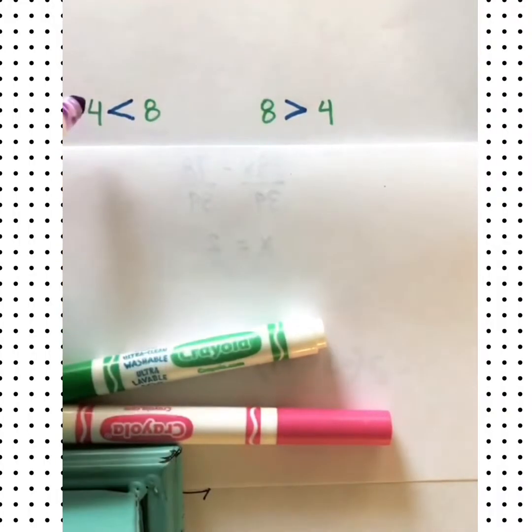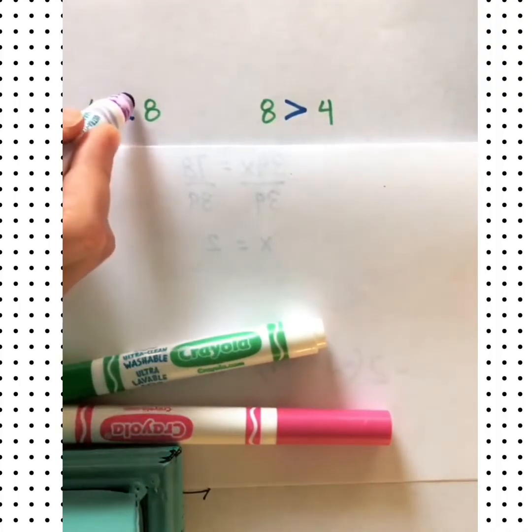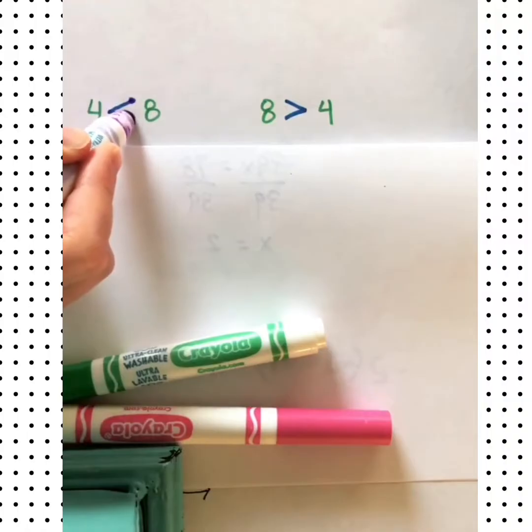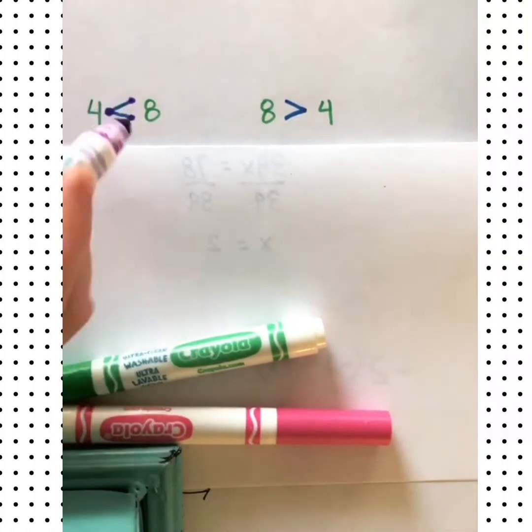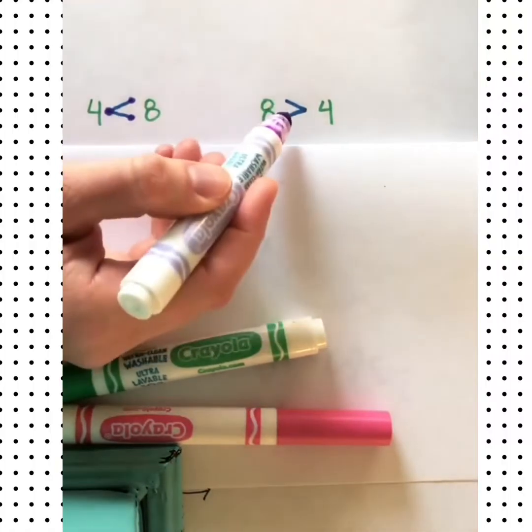These are inequality signs and when you're looking at two numbers and comparing them, a lot of students will draw two dots by the greater number and one dot by the number that is the least and then connect those to form their sign. This is a less than sign, this is a greater than sign.